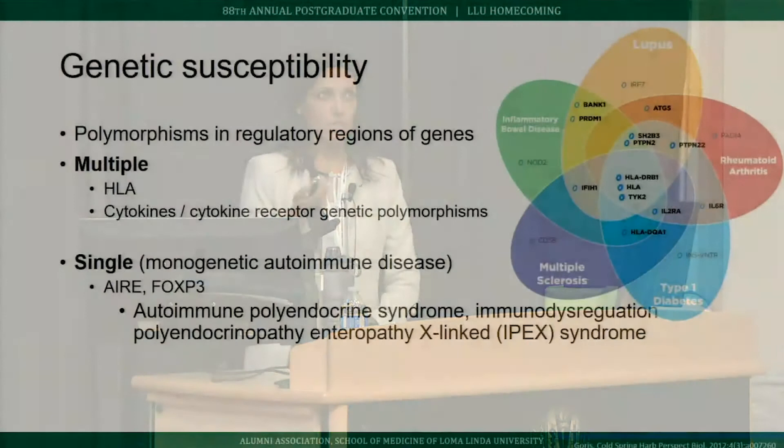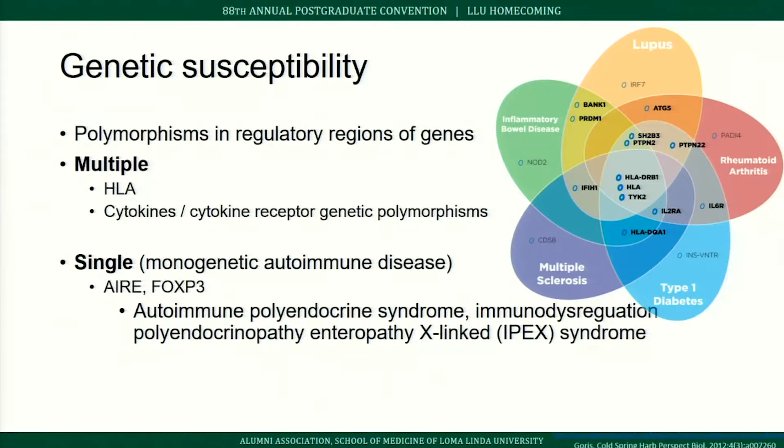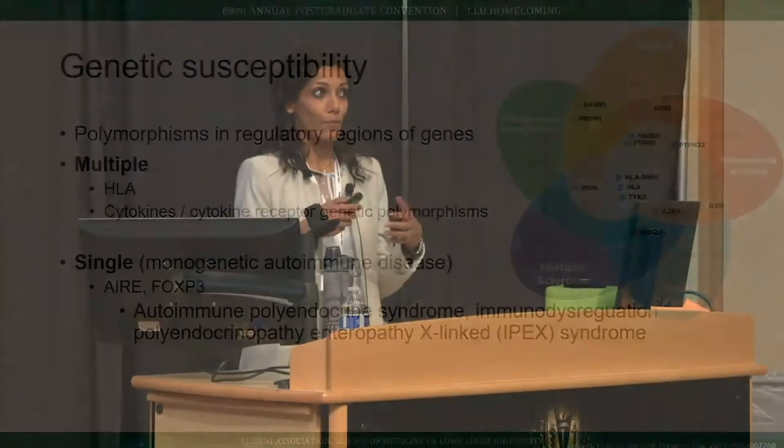Genetic susceptibility plays a large role in autoimmune disease risk but does not account for all of it — typically multiple genetic polymorphisms are involved. While genetic tests are now commercially available, making conclusions from a single result is very difficult because every person has a different risk profile.